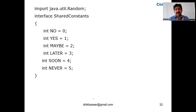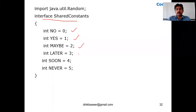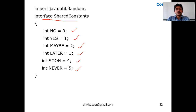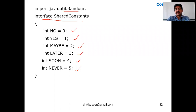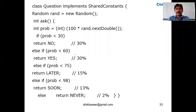The next topic — variables in interface — is very interesting. I'm creating an interface called 'SharedConstants'. I'm going to declare six different variables: NO = 0, YES = 1, MAYBE = 2, LATER = 3, SOON = 4, NEVER = 5. I'm also using a class called 'Random' from the 'java.util' package.